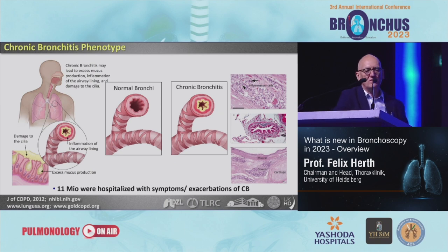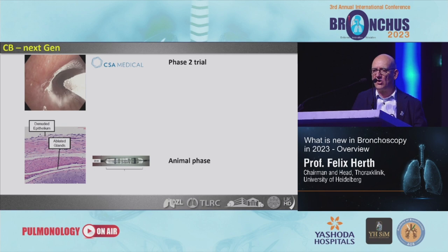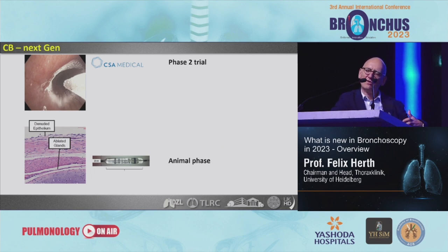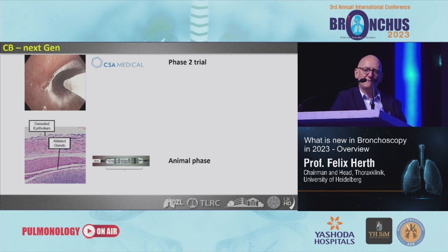For chronic bronchitis, we have rheoplasty with quite good data and a randomized control trial currently running. We also have two other upcoming technologies: spray cryo, with work coming from ongoing phase two trials, and another technology focusing on the same target — reducing the glands by a different heating technology. For chronic bronchitis I am relatively sure that by end of year we will have three technologies available, and then we have to decide which works best.